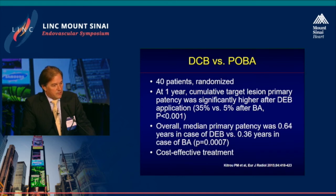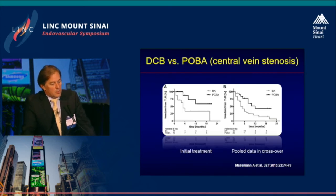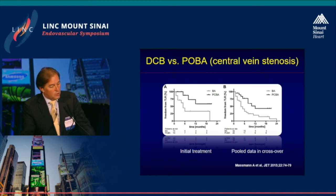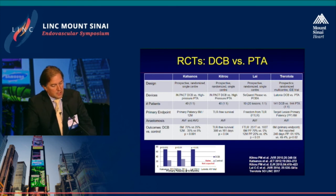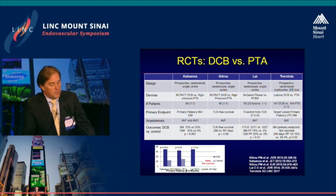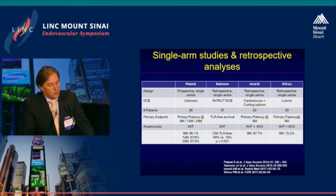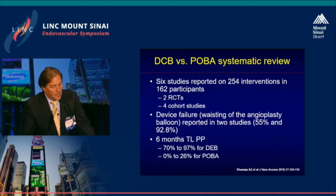This was addressed by a group with 40 randomized patients — still a relatively small group — but due to the reduction in the number of subsequent interventions it was shown to be a very cost-effective treatment. Also in central vein stenosis, a coated balloon with a crossover design showed much better results than bare balloons. The table listing all randomized data shows that at 6 and 12 months there were consistently better results using DCB compared to POBA, as well as across several single-arm and retrospective studies, sometimes even combined with cutting balloons.